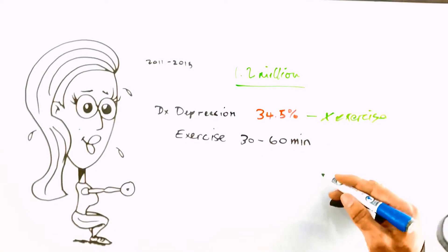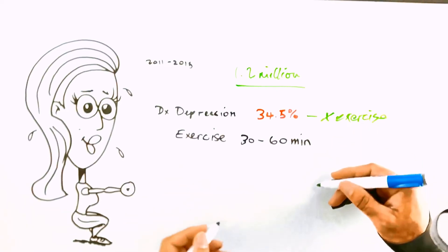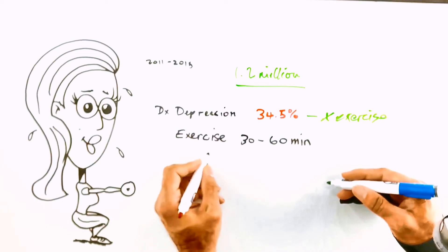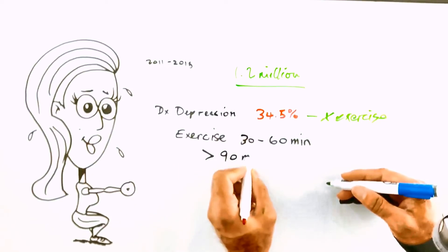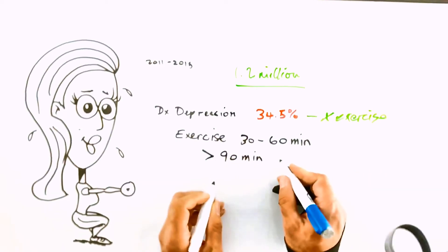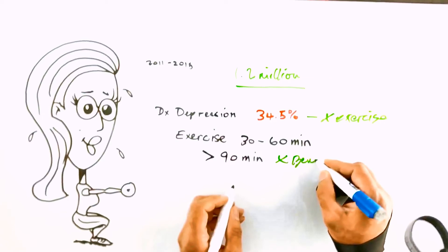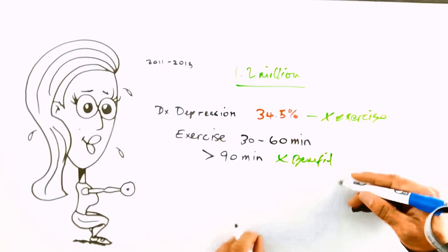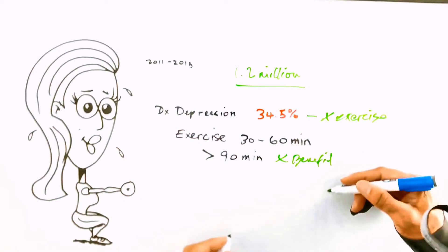That seemed to be the kind of golden hour to half an hour that was necessary for improving mental health. What they found, which was also interesting, is that going beyond that, so going greater than 90 minutes, provided no additional benefit over exercising for the 30 to 60 minutes.